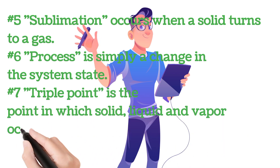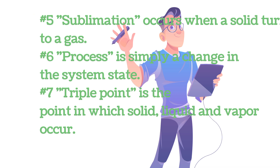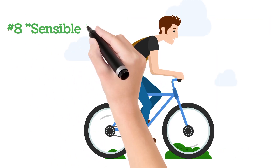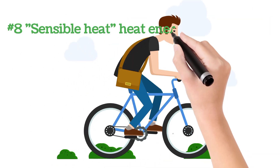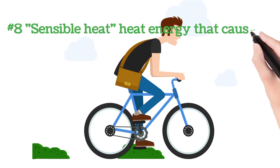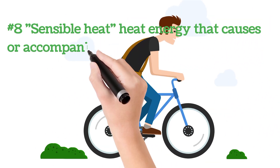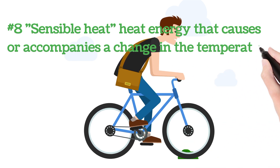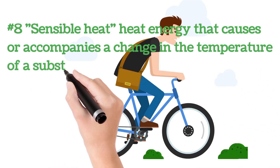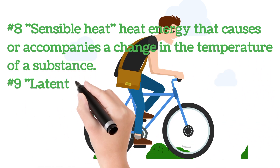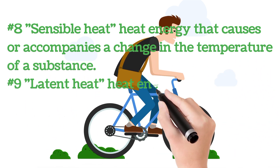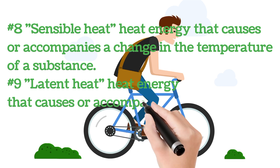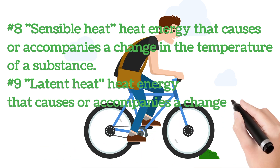Number seven: triple point is the point at which solid, liquid, and vapor all occur simultaneously. Number eight: sensible heat is the heat energy that causes or accompanies a change in the temperature of a substance.